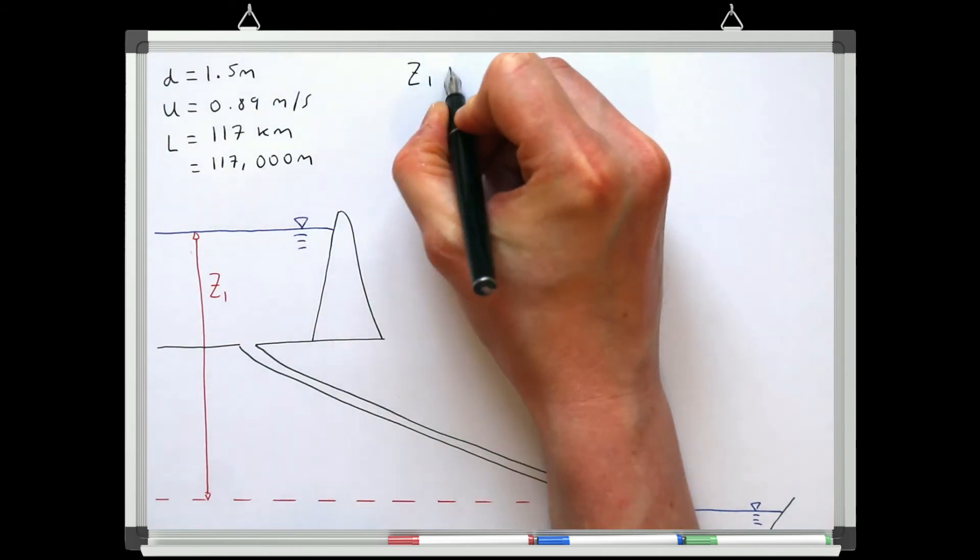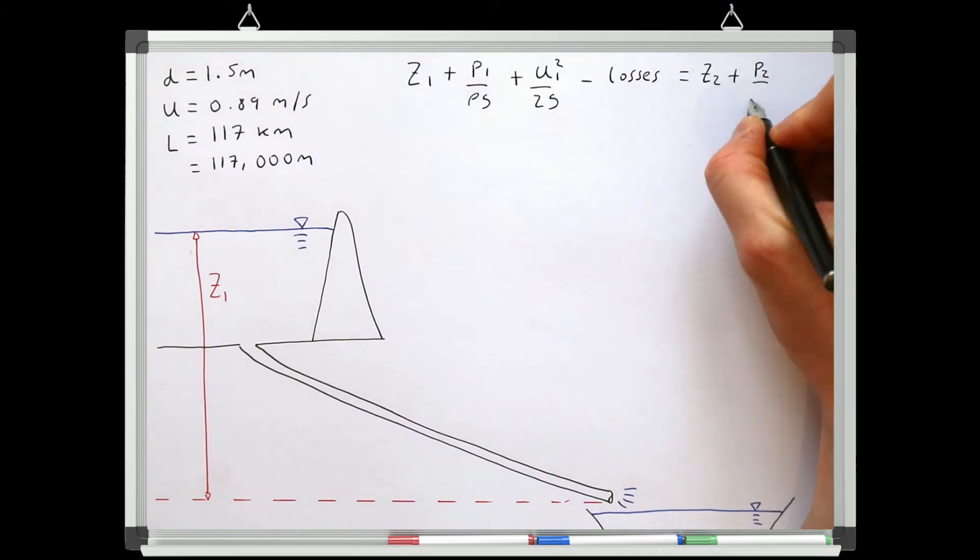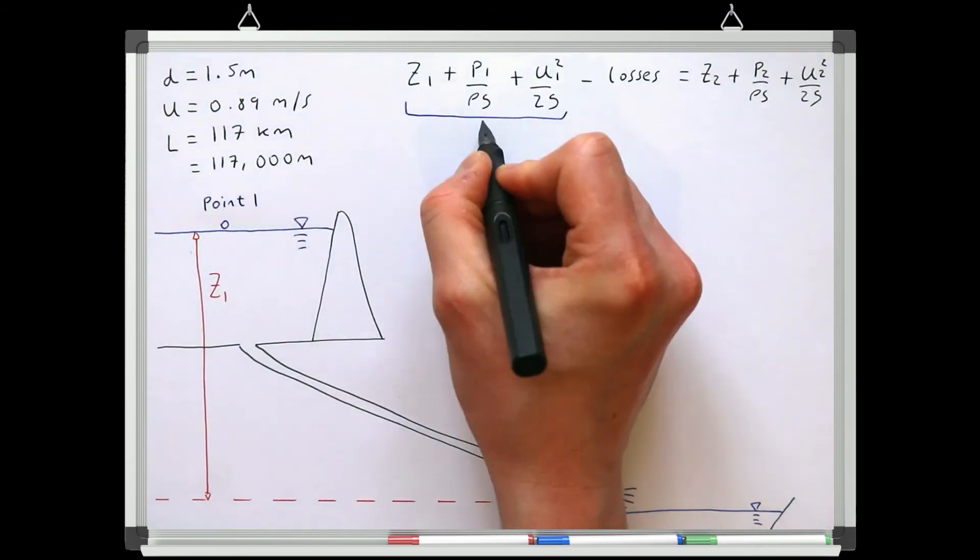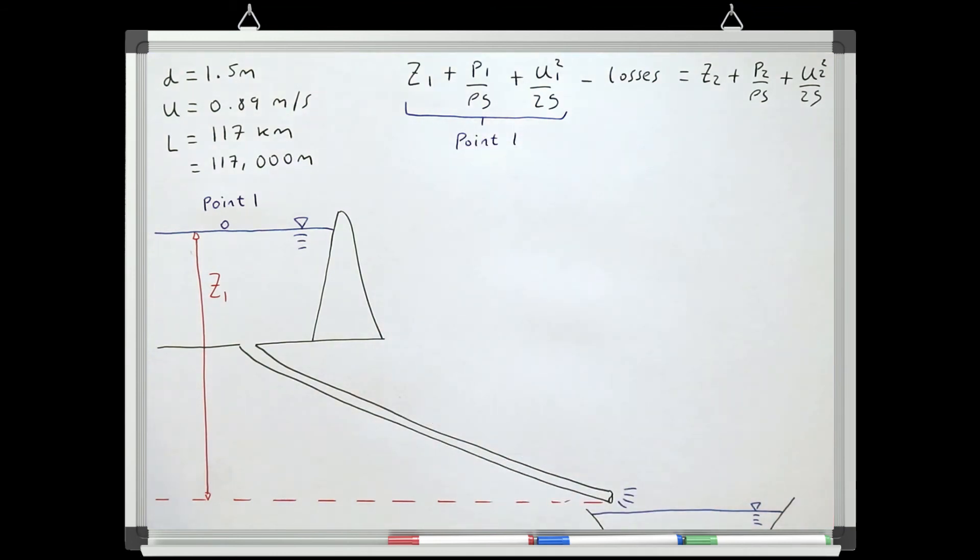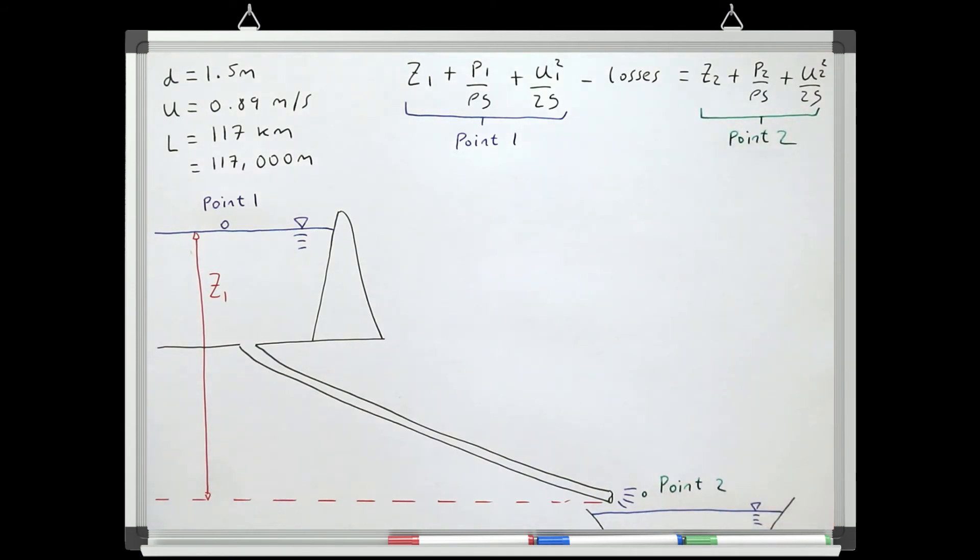So let's apply Bernoulli's equation between the water surface of the reservoir and the outlet pipe. So let's call the water surface of the reservoir 0.1 and where the water is leaving the outlet pipe 0.2. As always in these type of examples, the pressure head at the water surface of the reservoir can be neglected because we're returning to atmospheric pressure and assuming atmospheric pressure is 0.